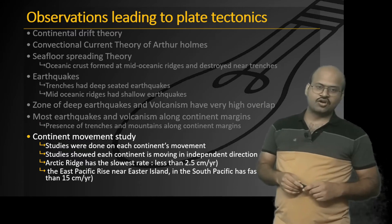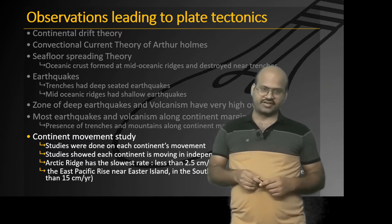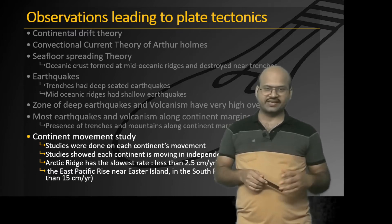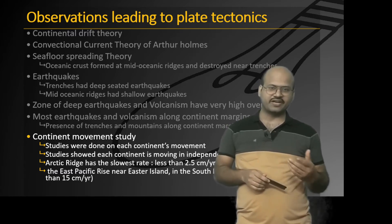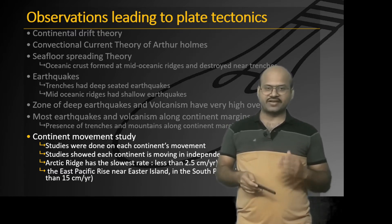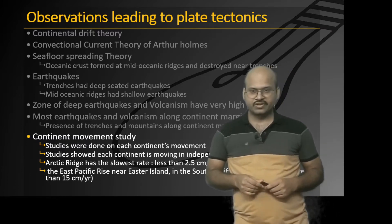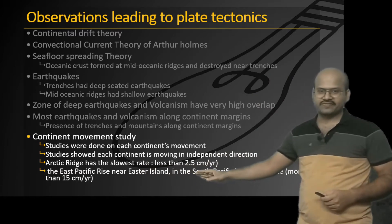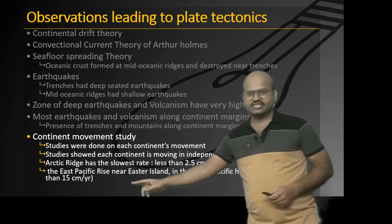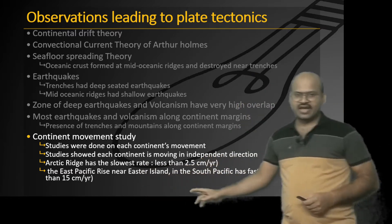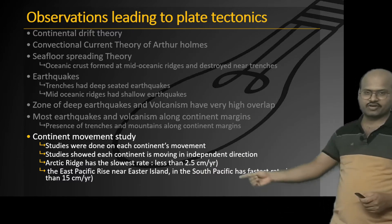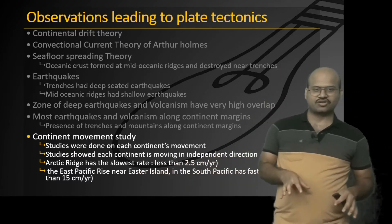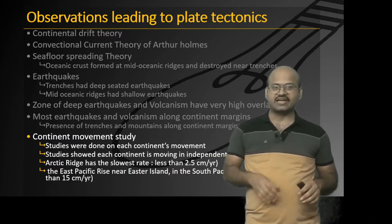Over the years, continent movement studies were done and it was found that different continents moved in different directions. These directions were independent of each other and their magnitudes also varied. The Arctic Ridge has the slowest rate at 2.5 centimeters per year, while the East Pacific Rise near Easter Island had the maximum rate of 15 centimeters per year. So different parts of the earth move in different directions at different velocities.